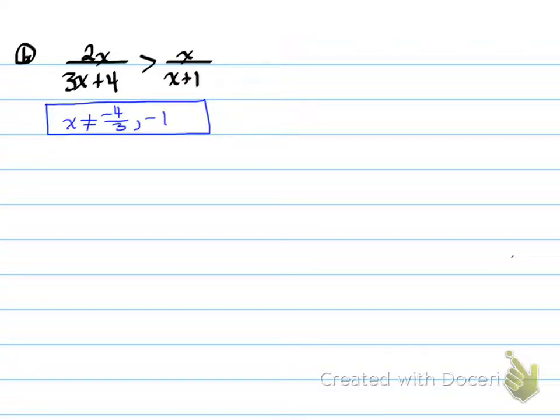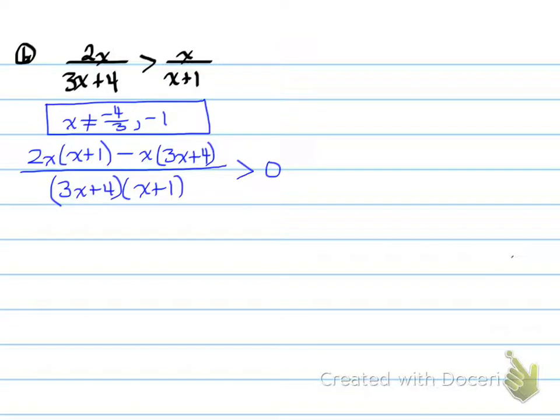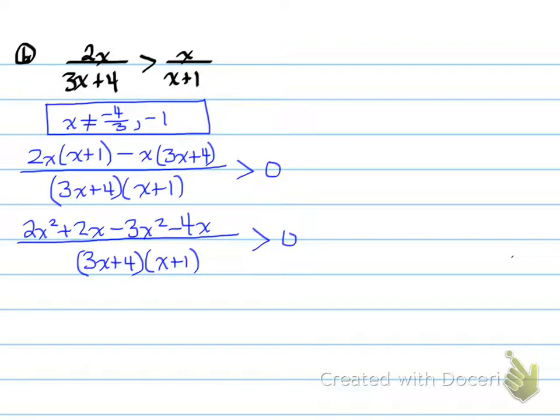Let's look at another example, part B. First thing we do, state the restrictions. Next, we're going to move everything to one side with a common denominator. That's exactly what we did here. Common denominator, we're comparing it against zero. On the right-hand side, everything moved to the left-hand side. And now we're going to expand. And then collect like terms.